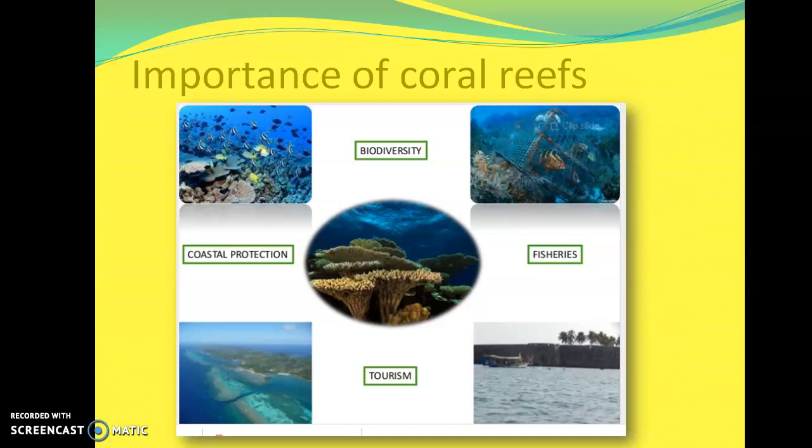For fisheries, coral reefs act as protection and a nursery, especially for shellfish and juvenile fish. They protect young fish from the open ocean so that larger, mature fish won't eat them, allowing survival and increasing the fish population. This contributes to biodiversity — as younger fish grow into mature fish, they increase the diversity of the ocean.